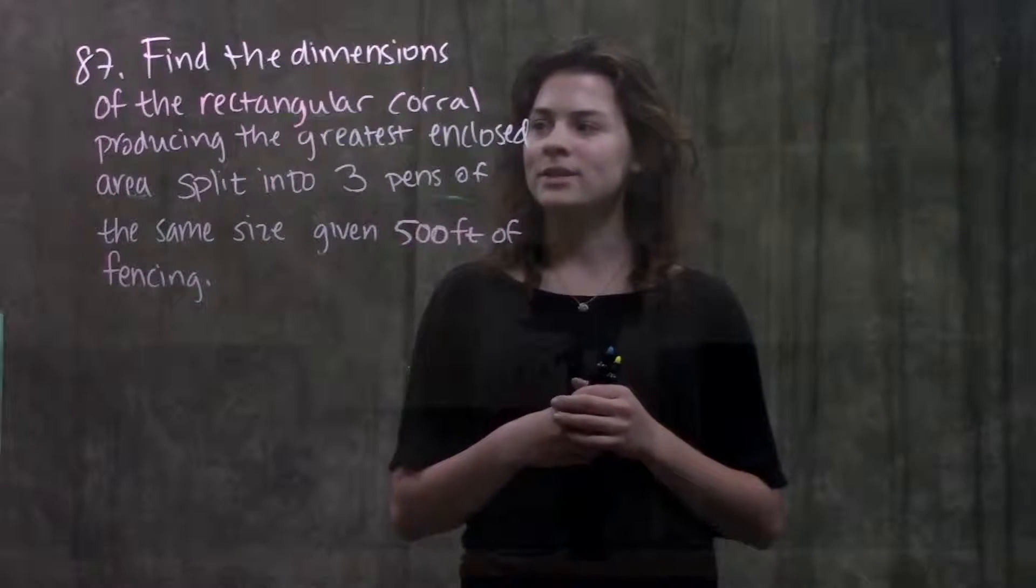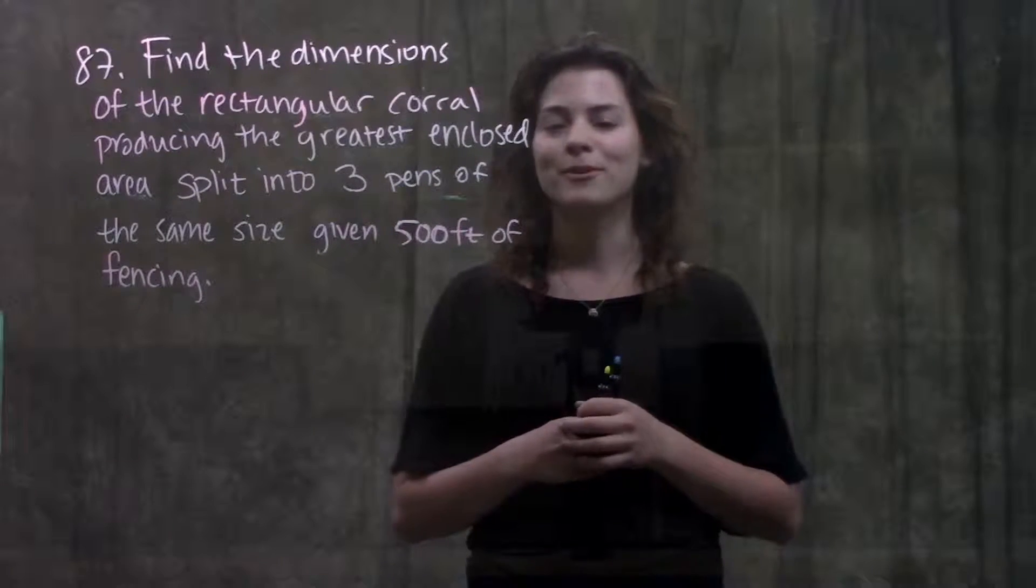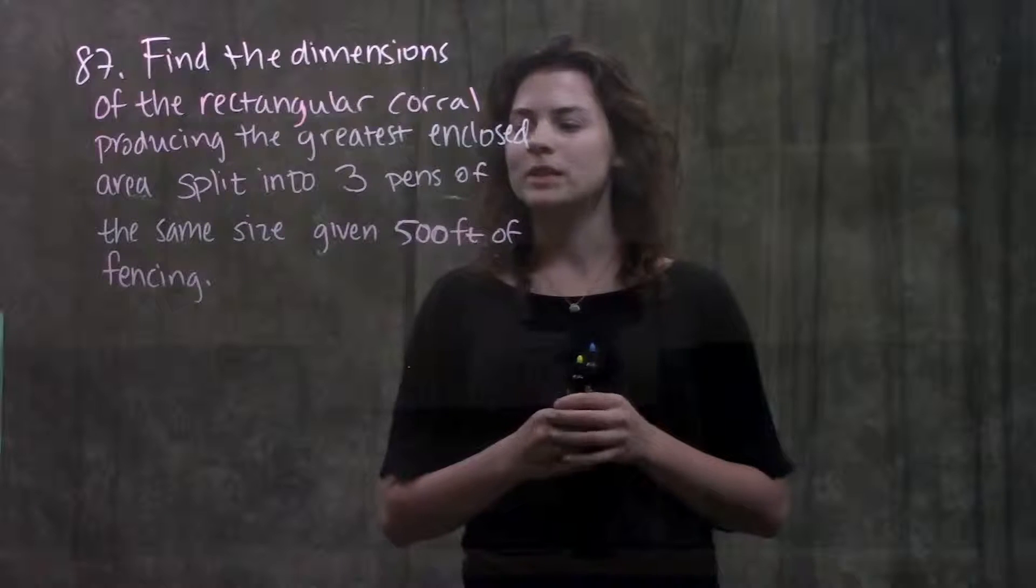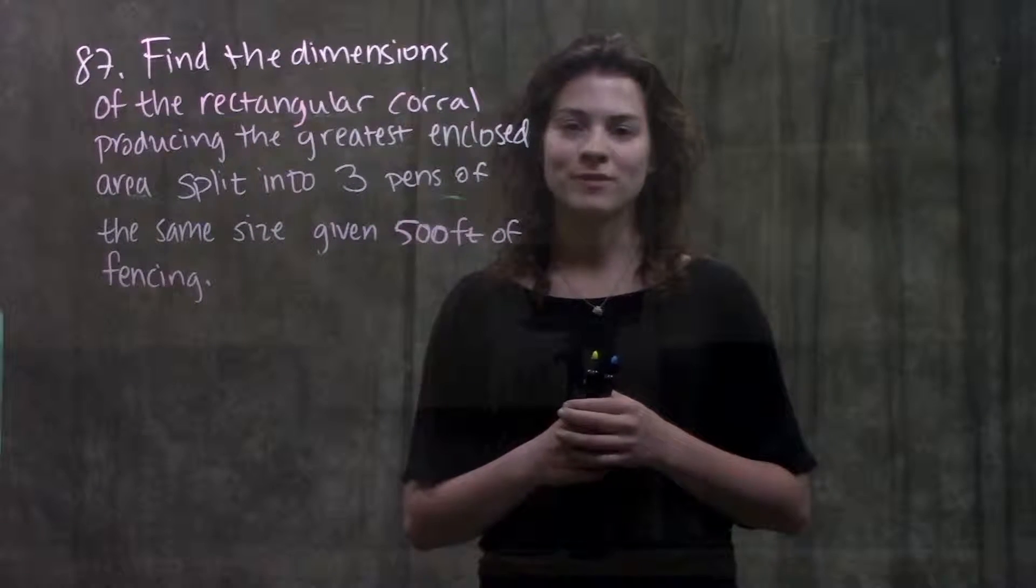So this problem tells us to find the dimensions of the rectangular corral producing the greatest enclosed area when it's split into three pens of the same size and we're given 500 feet of fencing.